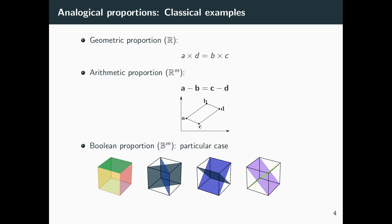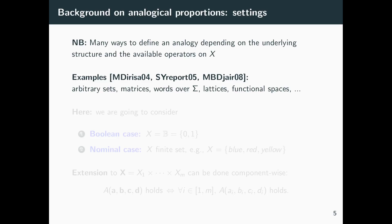Analogical proportions based on these three axioms include several classical examples, such as the numerical cases of geometric proportion and arithmetic proportion — which all of us have used extensively throughout our lives. You also have the restriction to the two-element case, the boolean proportion, and the different types of analogical proportions that can be found on a boolean cube are illustrated here.